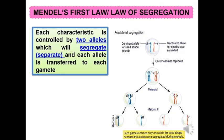Mendel's first law, also known as the Law of Segregation, states that each characteristic is controlled by two alleles, which will segregate, and each allele is transferred to each gamete, as shown in the diagram.